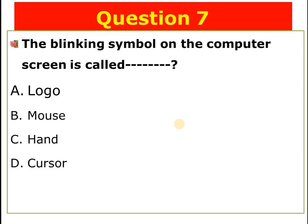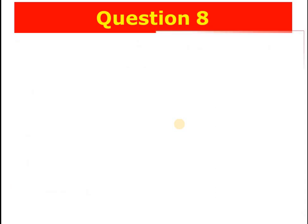Question number seven: The blinking symbol on the computer screen is called blank. A) Logo, B) Mouse, C) Hunt, D) Cursor. The answer is D — cursor is the blinking symbol on the computer screen.